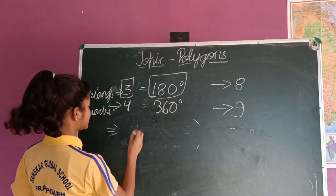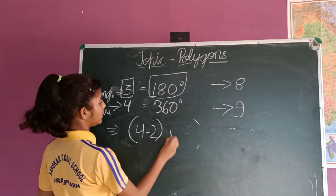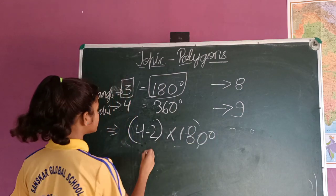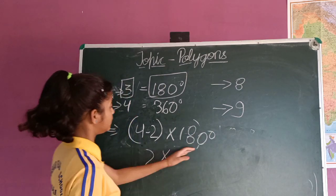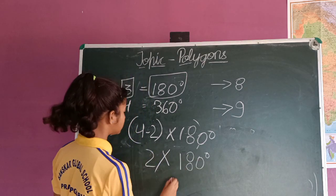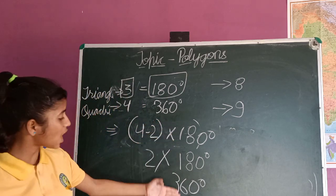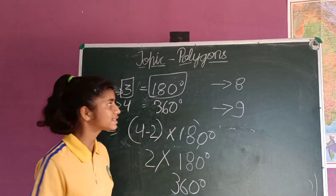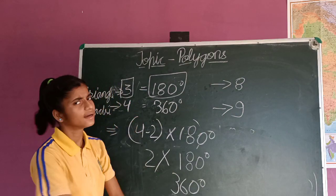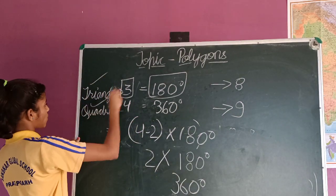For quadrilaterals, the number of sides is 4. So: 4 minus 2 into 180 degrees. That gives us 2 into 180 degrees, which equals 360 degrees. So we have verified that the sum of all angles in a quadrilateral is 360 degrees.